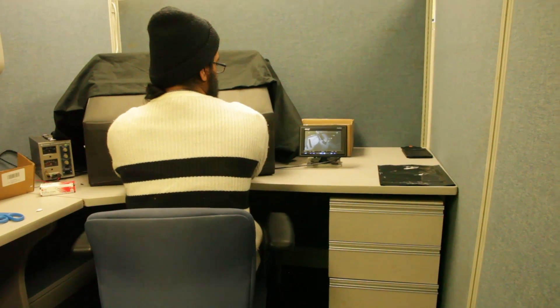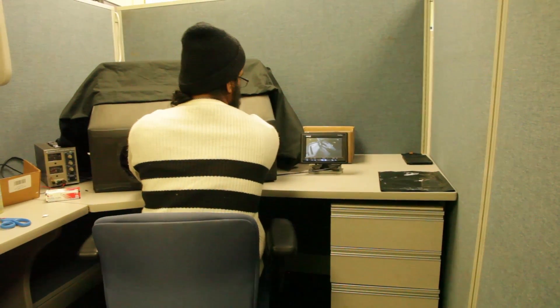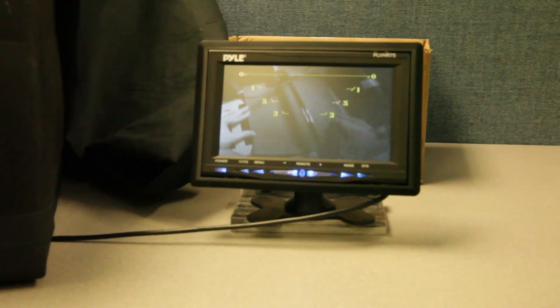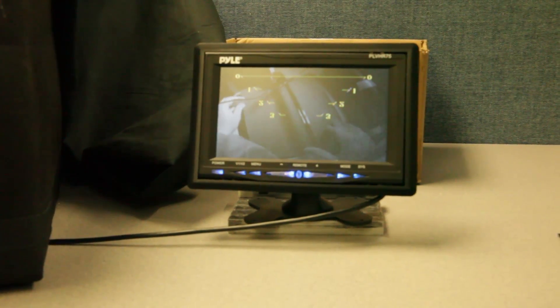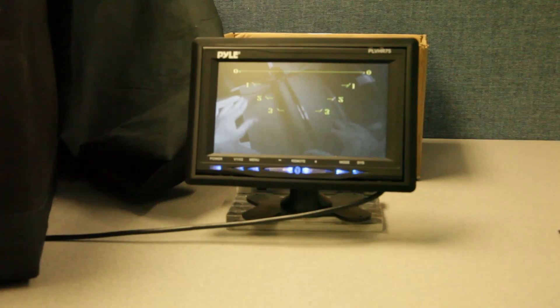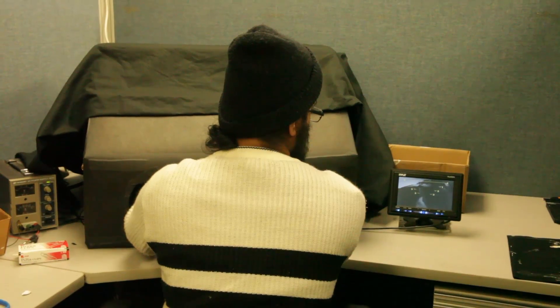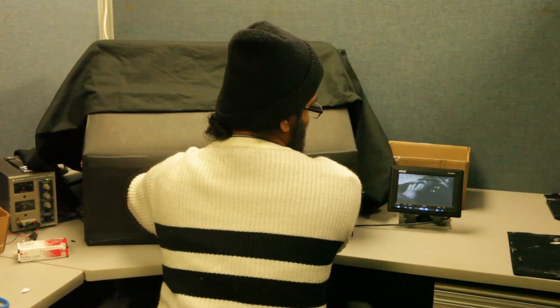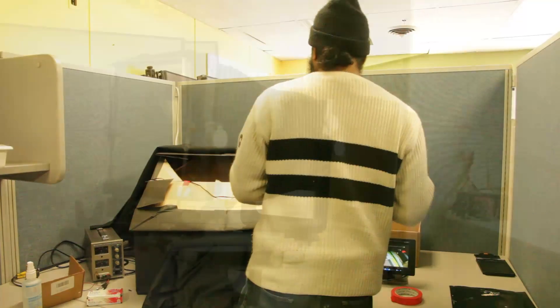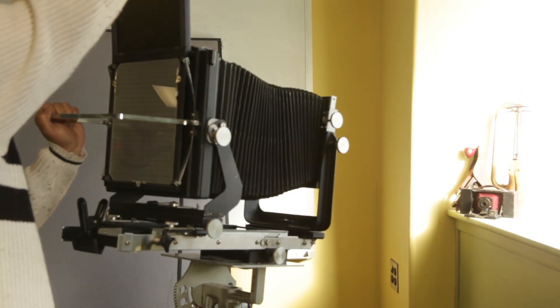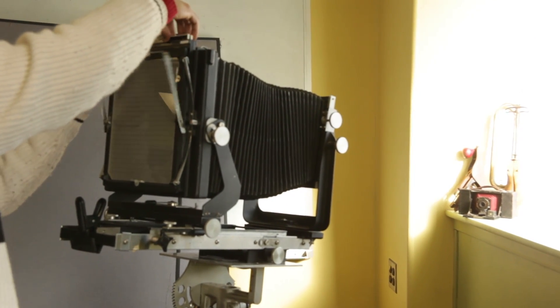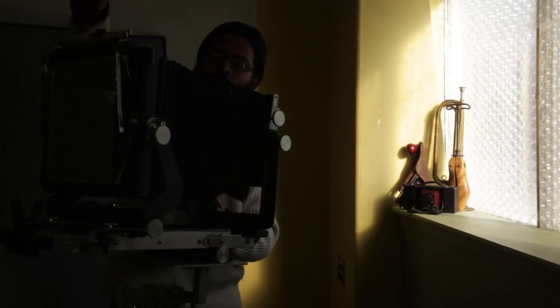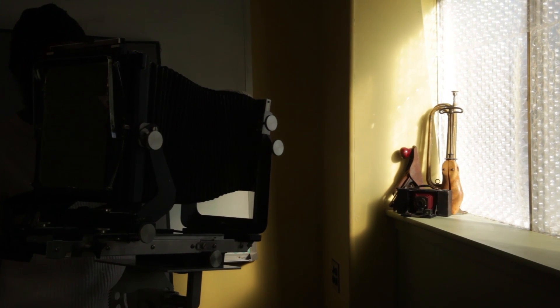So now we're going to go into the dark chamber and load this up in there. This is a special chamber designed by Bob Crowley at New 55 to be able to be in a light environment, but able to assemble things that you would in a dark room. So it takes a little getting used to to be looking off in one direction at live coverage of it. And now that we've assembled it into the regular cut film holder, we're going to make an exposure of this still life. F16 at a thirtieth of a second.